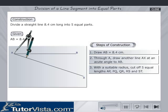With a suitable radius, cut off 5 equal lengths AP, PQ, QR, RS, and ST.